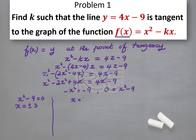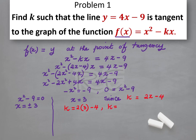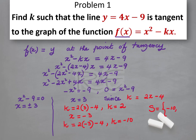Now if x is equal to positive 3, remember we are looking for k, and k is equal to 2x minus 4. So k will be 2 times 3 minus 4, which means k is equal to 2. And when x is equal to negative 3, k will be 2 times negative 3 minus 4, which is negative 6 minus 4, which is negative 10. In conclusion, the solution is k equal to negative 10 or k equal to 2.